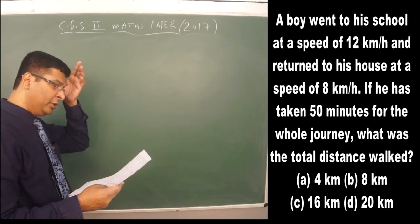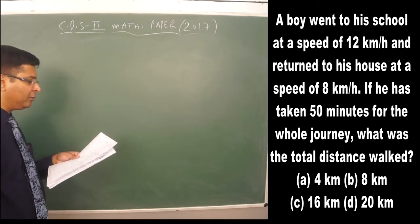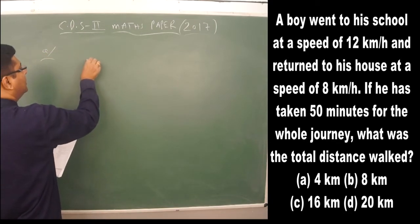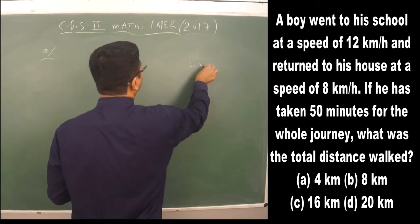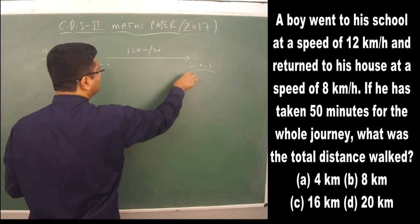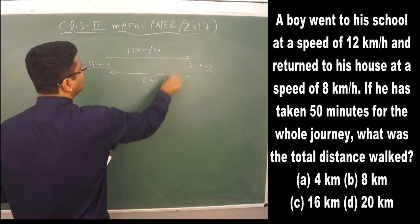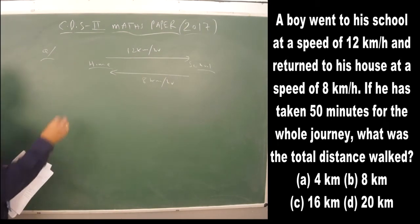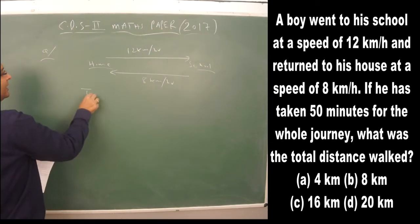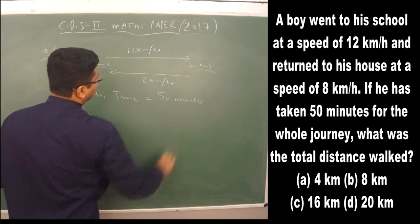Let's take a question from the chapter Speed, Distance and Time. A boy went to school at a speed of 12 km/h. While returning, he traveled at a speed of 8 km/h. The total time for going from home to school and returning back home is given as 50 minutes.